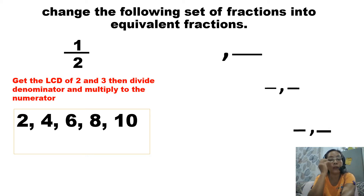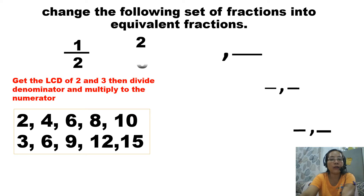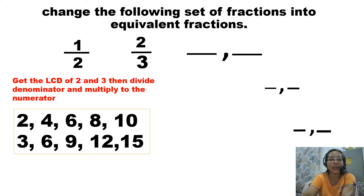These are the multiples of 2. Next, we have 2 thirds as the partner fraction of 1 half. So here are the multiples of 3 — let's list them down: 3, 6, 9, 12, and 15. Now, take a look at the denominators 2 and 3, or the multiples of 2 and 3. Choose a number that appears in both lists — the same number between the multiples of 2 and 3. The only number that is the same between both is 6, as their common multiple.